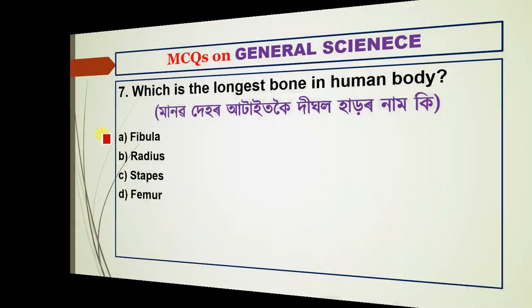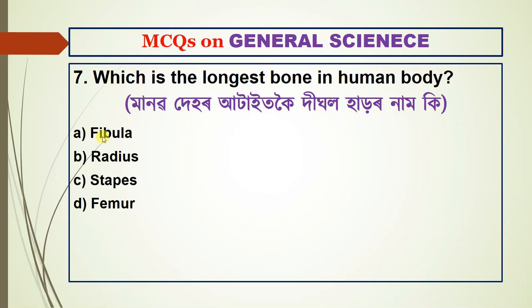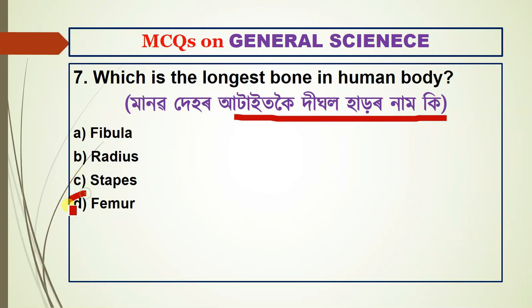Question number seven: which is the longest bone in the human body? The answer is the femur — option D.